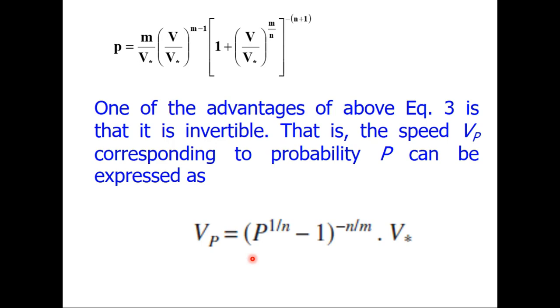One of the advantages of this equation is that it is invertible, means the speed corresponding to a probability P can be expressed if you rearrange these terms. V_P equals P raised to power 1 minus n minus 1 whole raised minus n upon m into V star. So you can calculate the speed corresponding to a given probability.